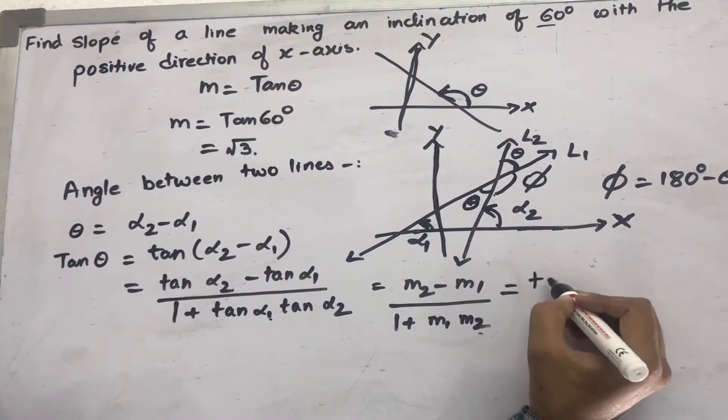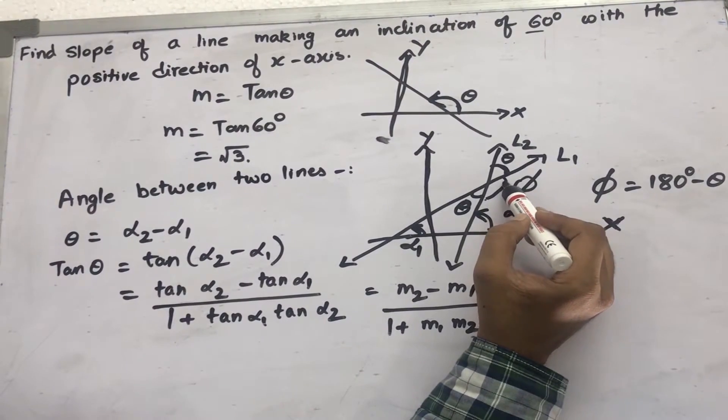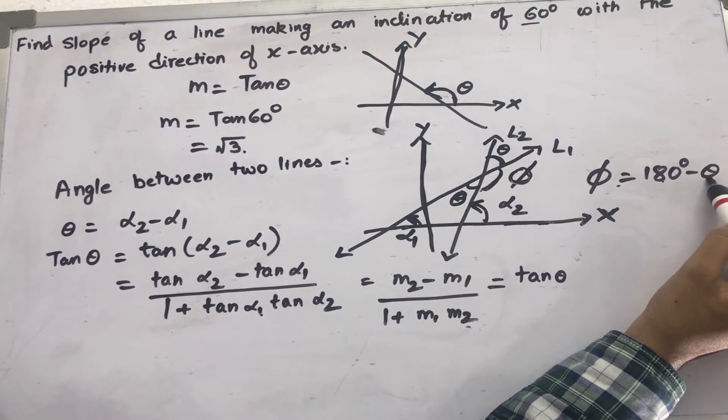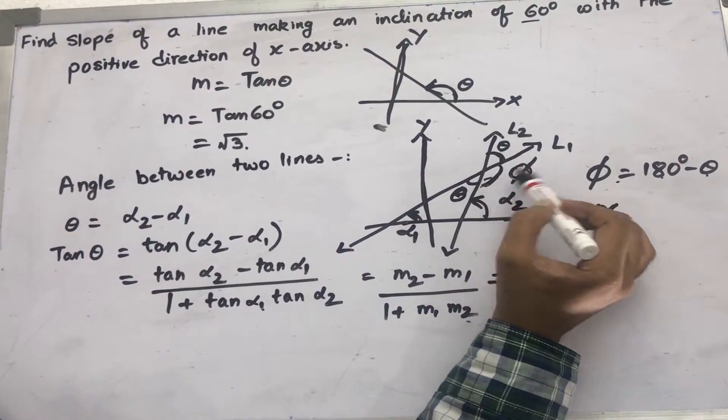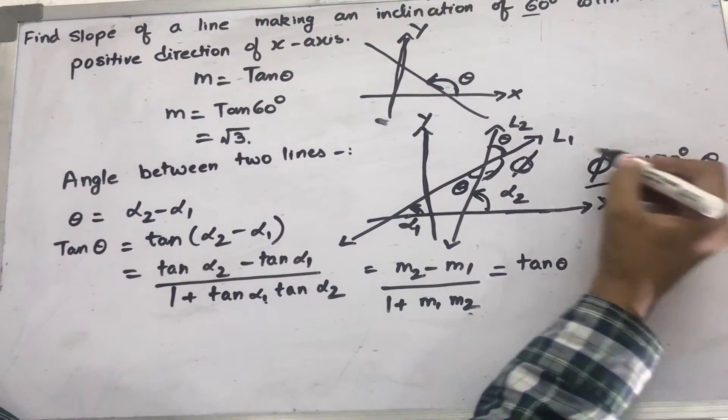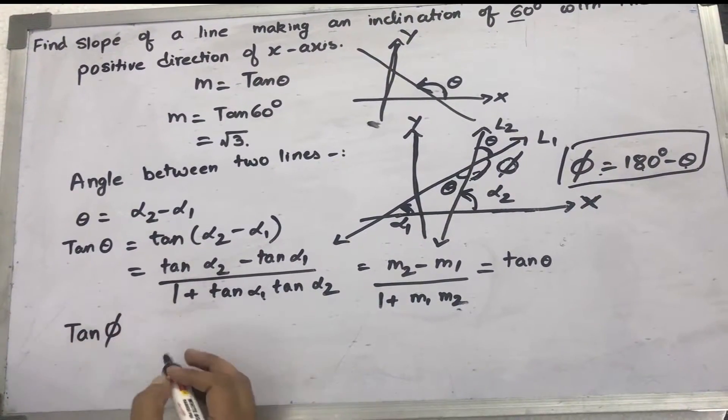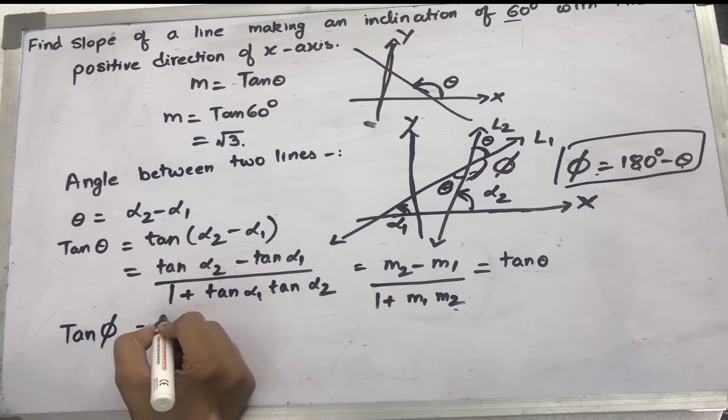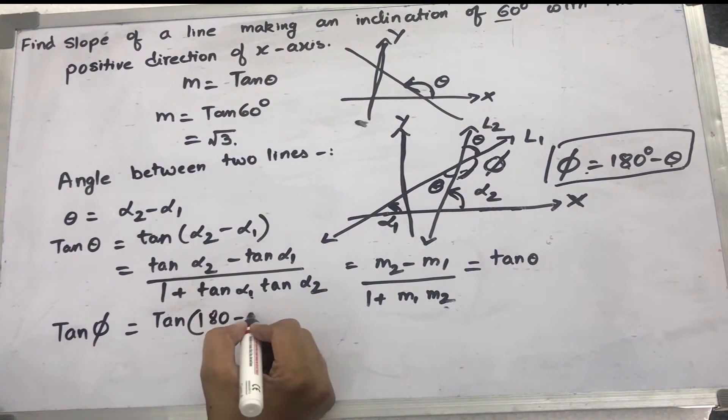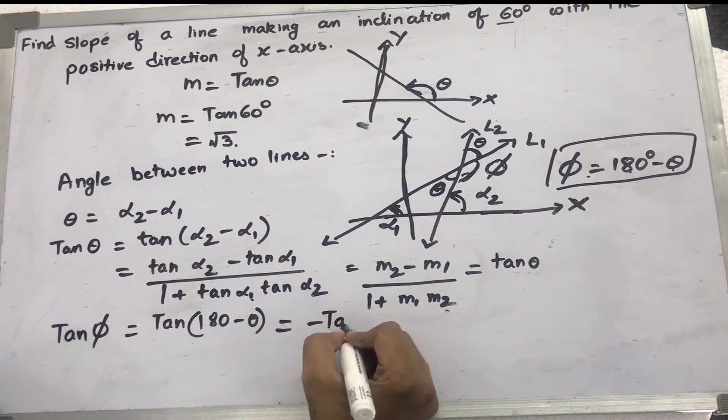Now, this is equal to tan theta. The angle between the lines is also phi. I can say that phi is equal to 180 minus theta, because theta plus phi is equal to 180 degrees, forming a straight line. So based on this, I can write tan phi equals tan of 180 minus theta. Now, tan of 180 minus theta is minus tan theta.